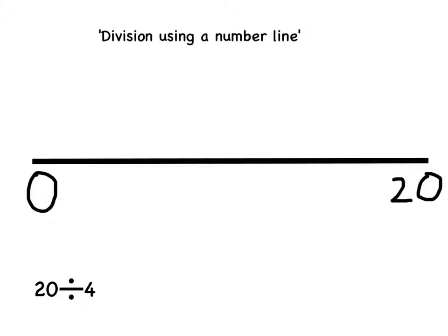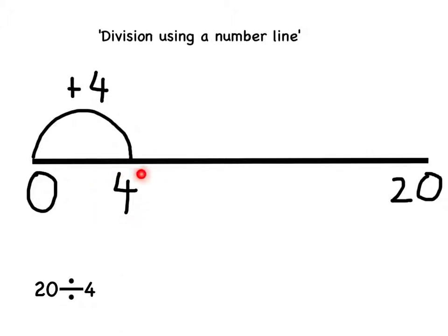Because our division is asking us to divide by 4, we are going to count up in 4s. So draw your first jump of 4. 0 and 4 is 4. From this number add on another 4, which will take us to 8.